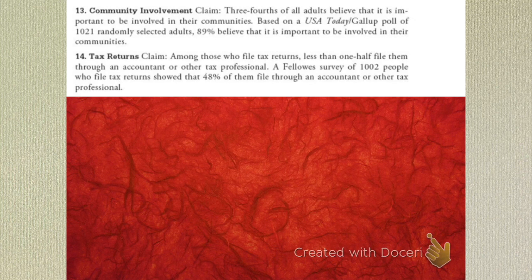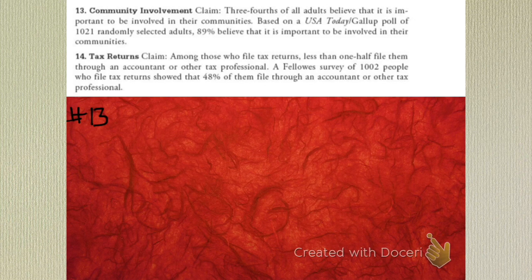M13, number 13. The claim is that three-fourths of adults believe that it is important to be involved in their communities. Based on this Gallup poll of a bunch of people, 98% believed that it's important to be involved in their communities. What are we testing? A proportion? Yes, we're testing a proportion. We're setting up the null and the alternative.